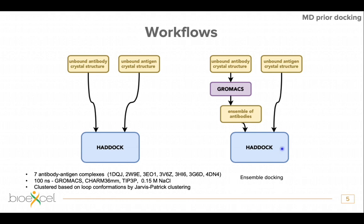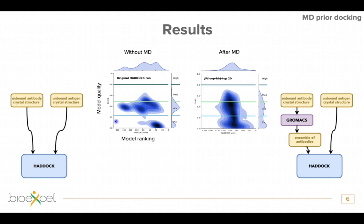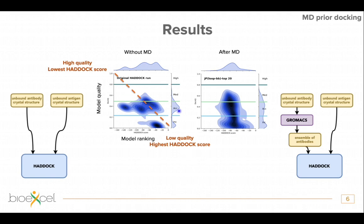This was done for seven antibody-antigen complexes. These plots show model quality versus model ranking — in the ideal scenario you'd like to see a correlation where the highest quality model gets the lowest HADDOCK score. As you can see, this is not always the case; the results are more spread, with many acceptable quality models ranked differently. This was the scenario without MD.